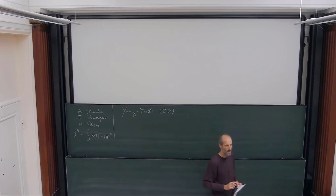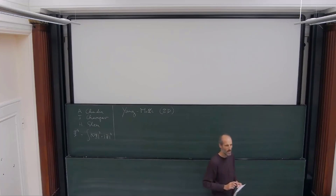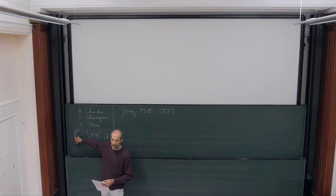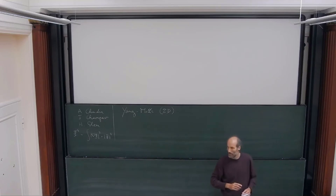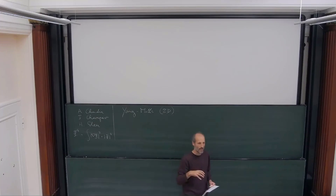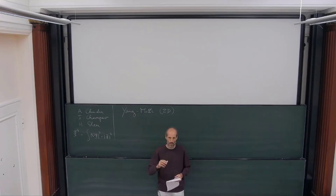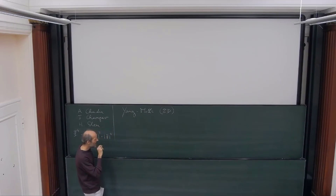We want to basically carry that kind of program through for Yang-Mills. In the case of phi-4, the basic object is essentially just a function — a real-valued, or maybe complex-valued, or R^N function from the underlying state space. In the case of Yang-Mills, the basic object is actually a connection, and the basic space you start from is what's called a G-principal bundle.